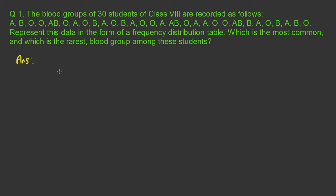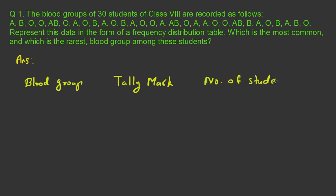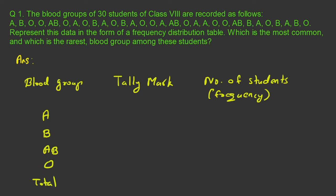I am going to do it with tally marking in this question. In the first column, I have to put blood groups. Tally marking is done in the second column, and in the third column I have to write the number of students, which is the frequency. There are four blood groups given: A, B, AB, and O. So I require four rows plus one row for total. I am going to draw the rows now.